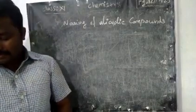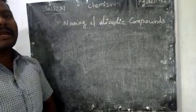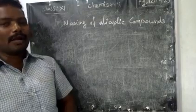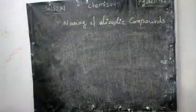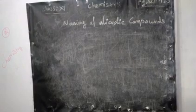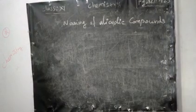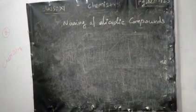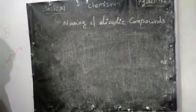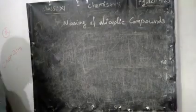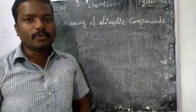We have now finished all the examples for alicyclic compound naming. Next we will see a little about aromatic compound naming. Aromatic compounds are those which have a benzene ring, and we will cover that in the next class. Thank you.